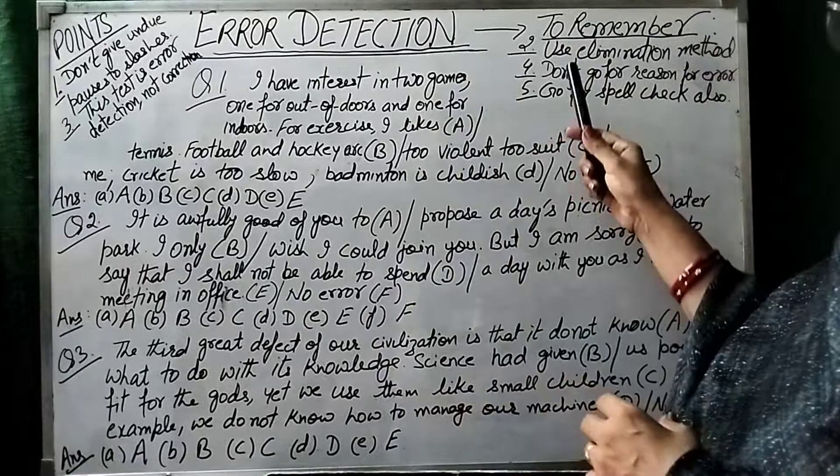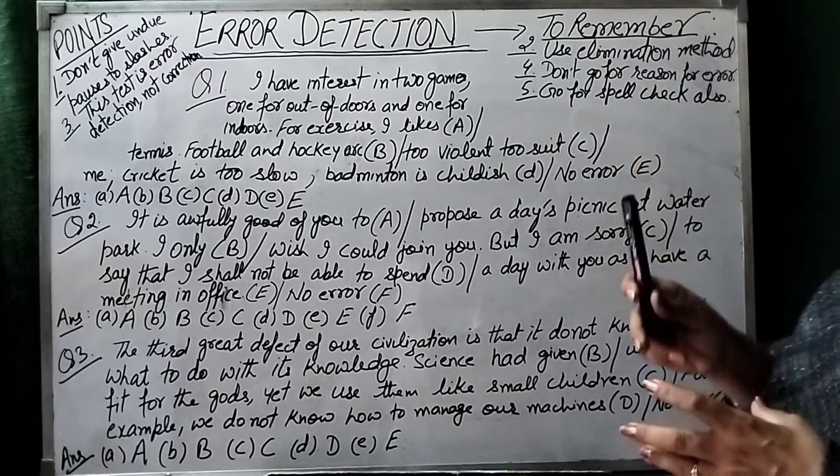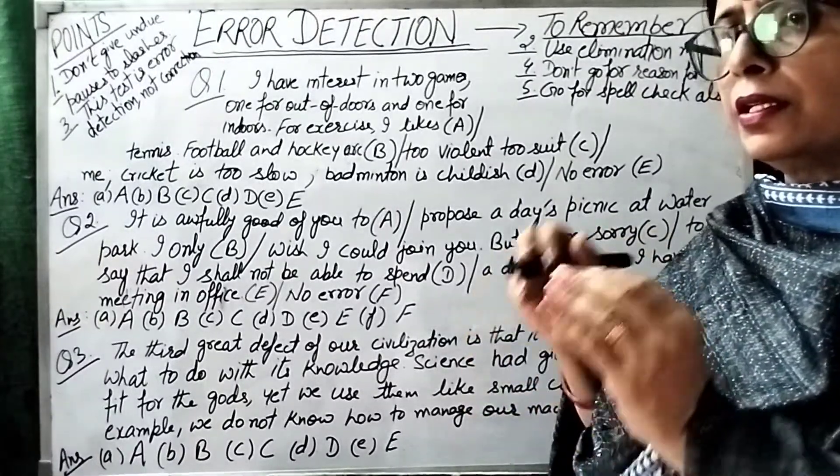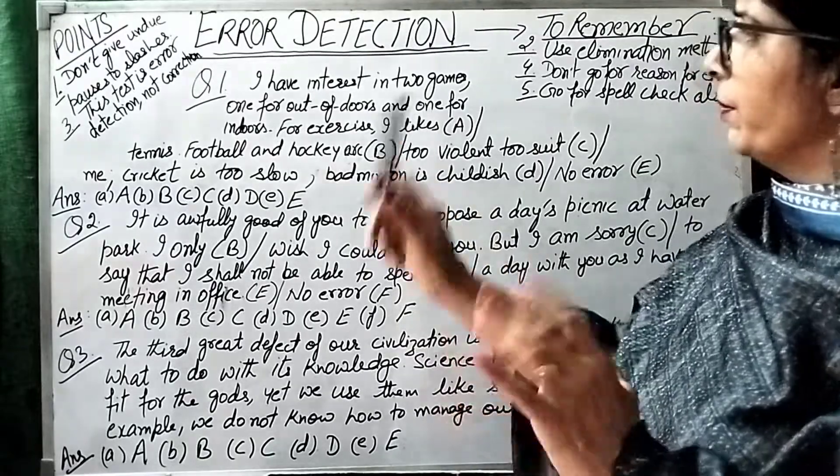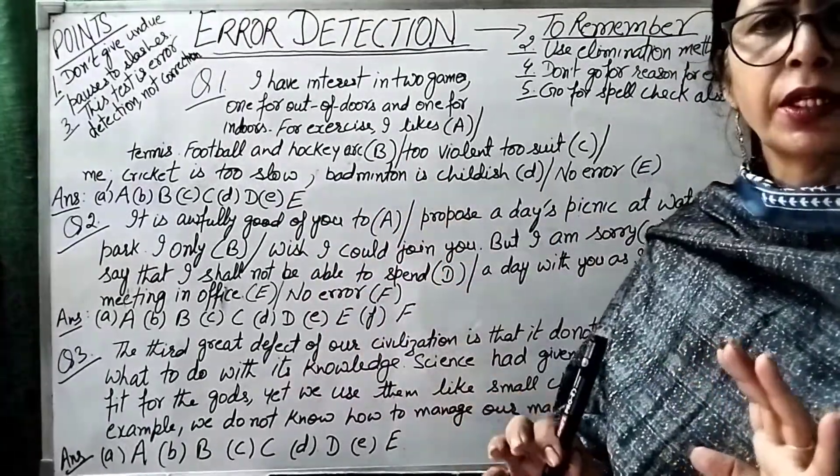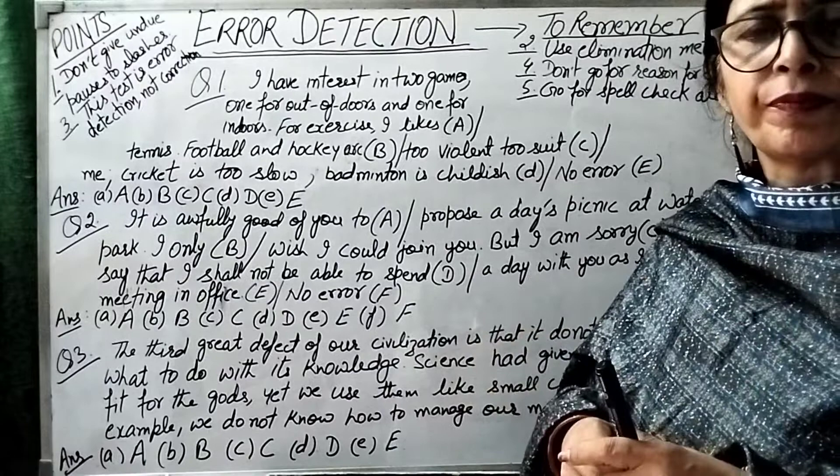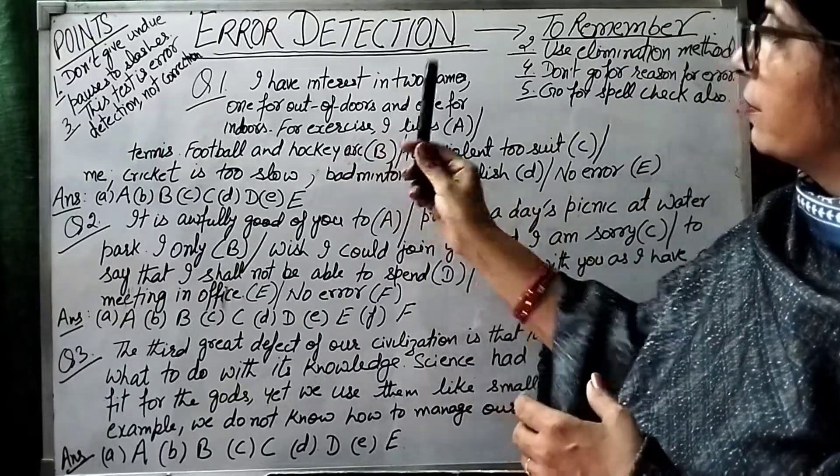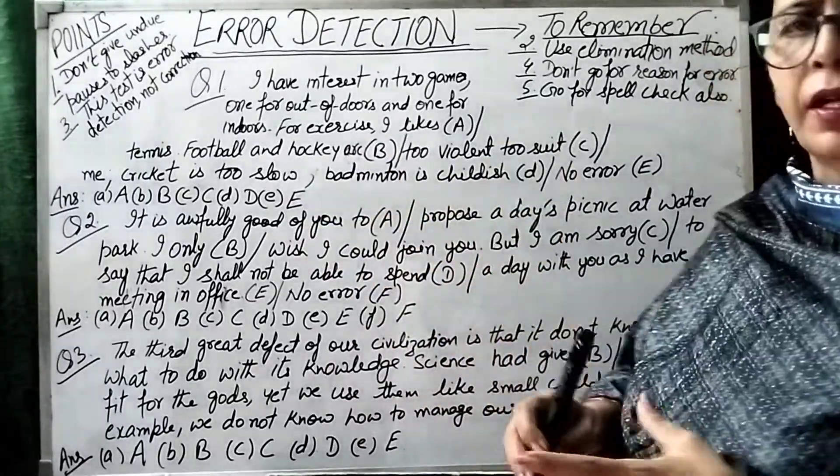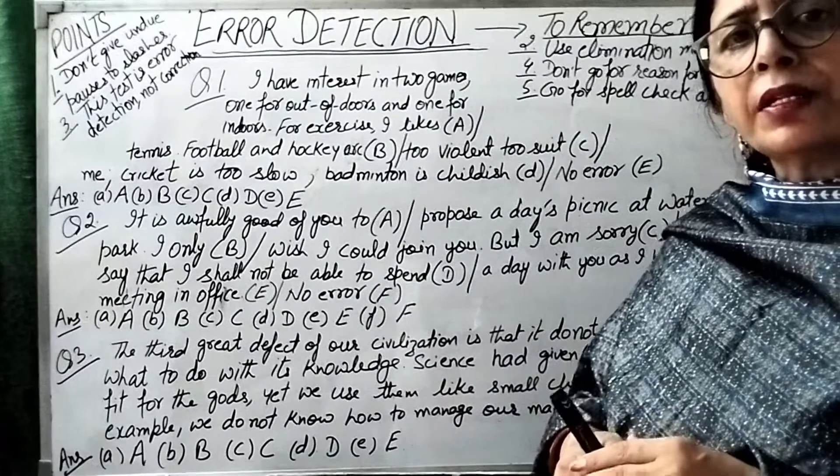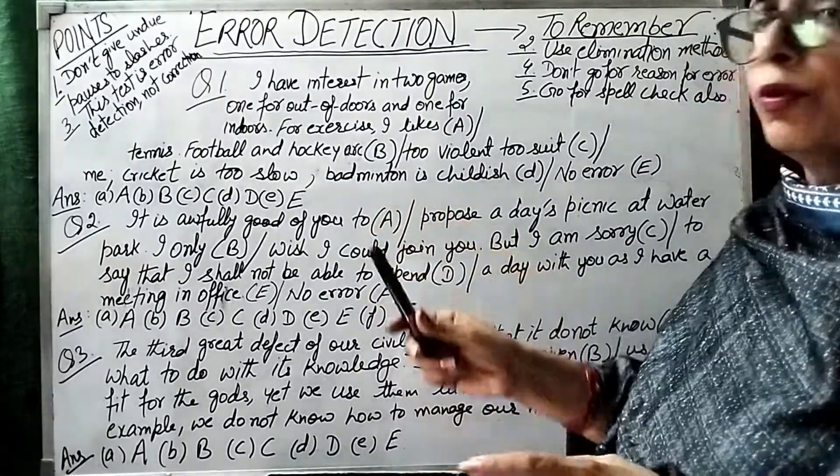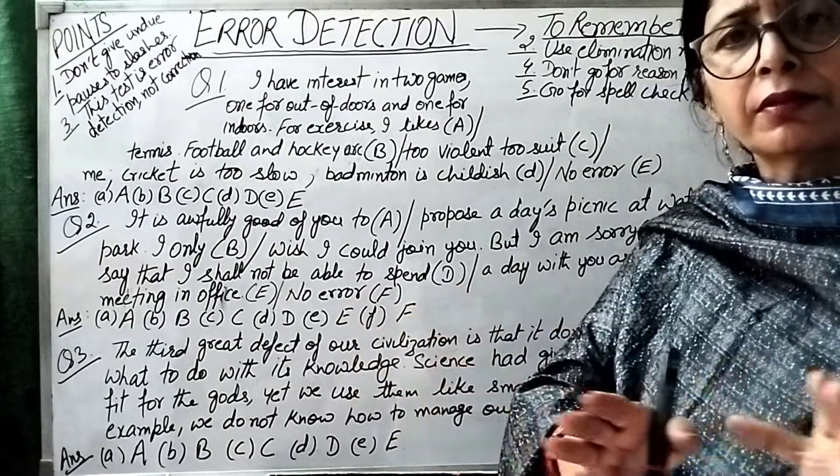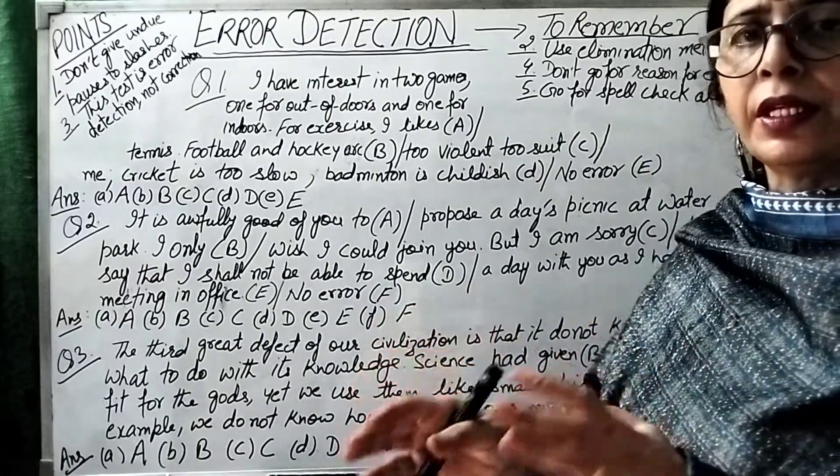Second point: use elimination method. Elimination method means that you know that this point means no mistake or no mistake. First you will find if mistake is in A, B, or C, but the best method is to find that there is no mistake.